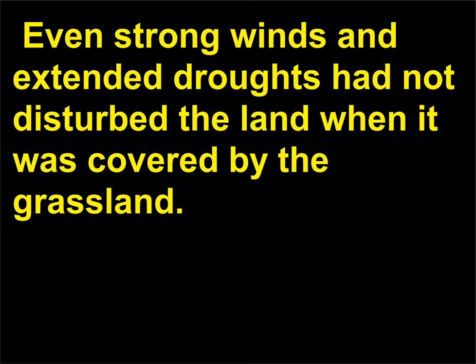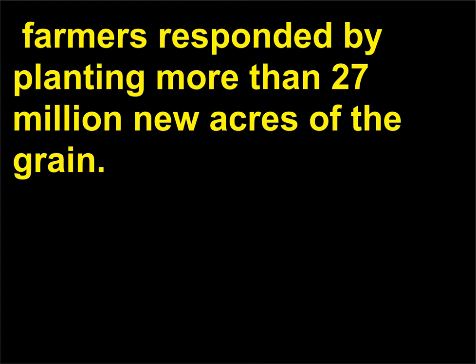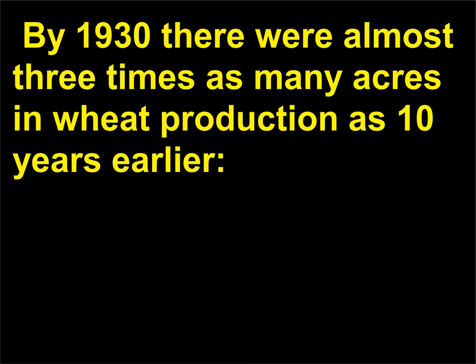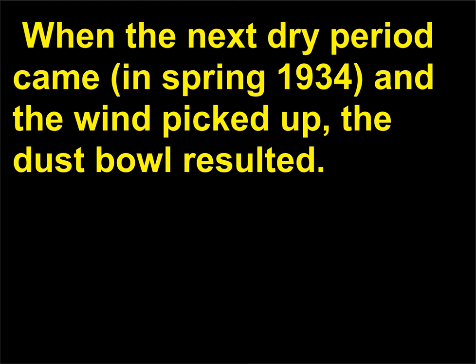Even strong winds and extended droughts had not disturbed the land when it was covered by grassland. When the demand for wheat increased after World War I, 1914–18, farmers responded by planting more than 27 million new acres of the grain. By 1930 there were almost three times as many acres in wheat production as 10 years earlier. Most of the buffalo grass that had prevented the earth from blowing had been removed. When the next dry period came in spring 1934 and the wind picked up, the Dust Bowl resulted.